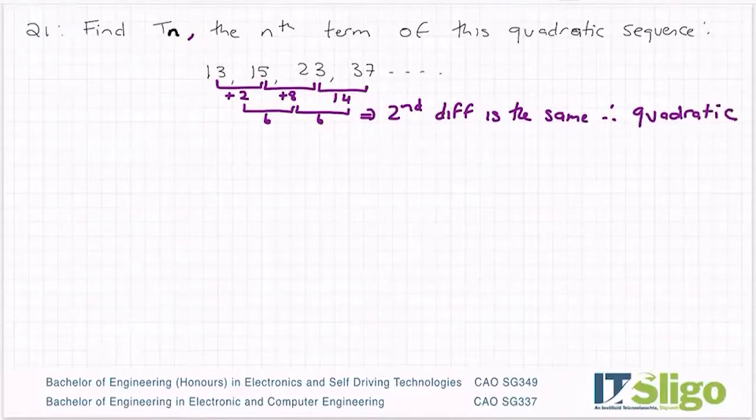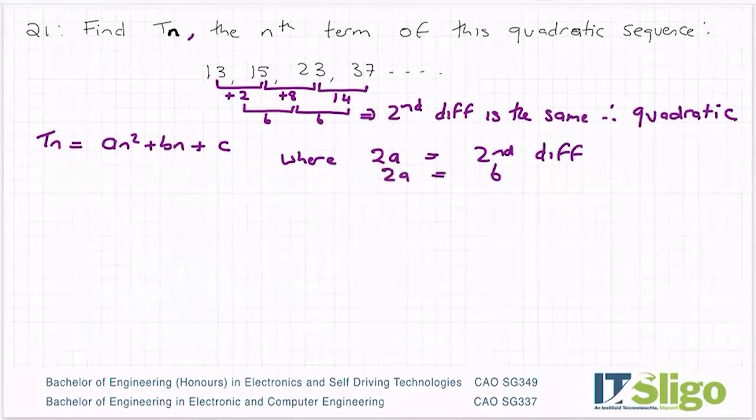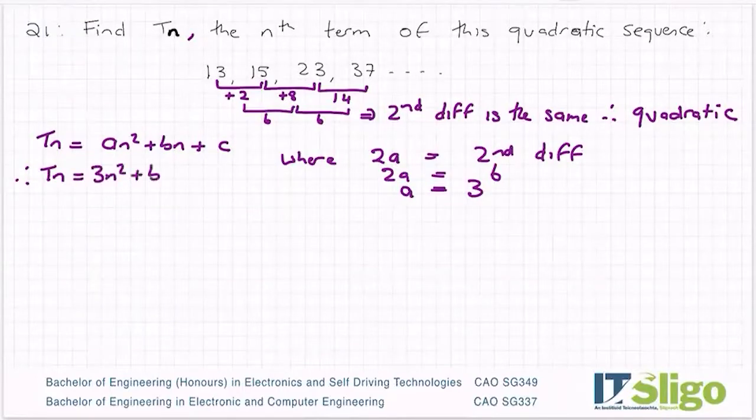Therefore I now know that the general term is given by an² + bn + c, where 2a is equal to the second difference. 2a is equal to 6 in this case, that being the second difference. Divide across by 2, so a is equal to 3. So now I can feed that back and Tn is equal to 3n² + bn + c, and I need to figure out what b is and what c is.